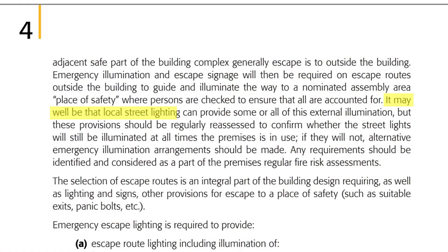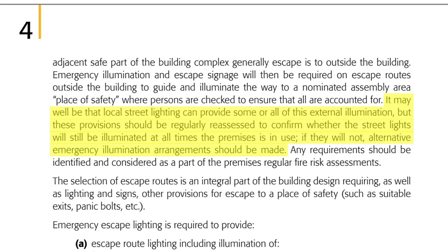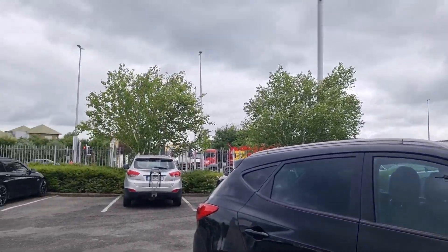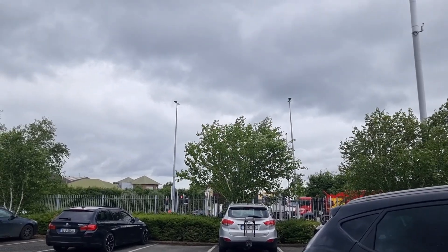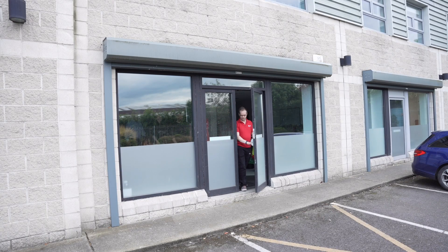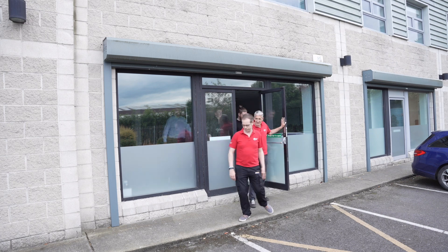Before worrying about providing emergency lighting along a path to the assembly point, the guide notes that local street lighting may provide some or all of this external illumination, but these provisions should be regularly reassessed to confirm the street lights will still be illuminated at all times the premises is in use — if not, alternative emergency illumination arrangements should be made. Also, the assembly point must not be an internal courtyard; outside means a place where people can get away from the building entirely.